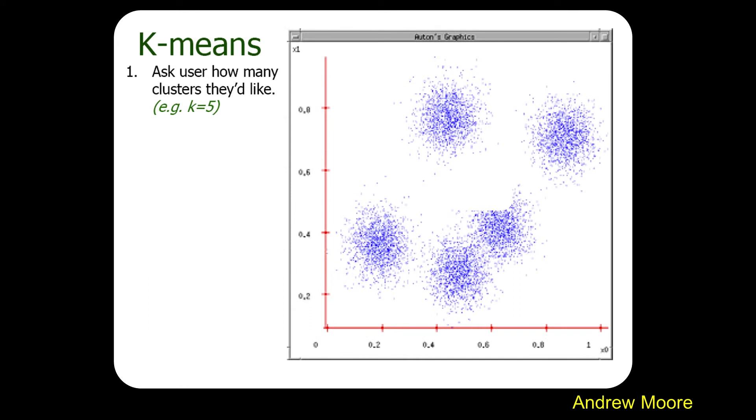Here's a nice little example from Andrew Moore, recently appointed the dean at Carnegie Mellon. Congratulations, Andrew. So here we have k-means, right? So we got a bunch of points.